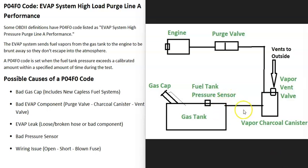The basics of how EVAP systems work: gas vapors leave the gas tank and go to what's called a charcoal canister, which is kind of like storage for the gas vapors. Located in or right next to the charcoal canister is a vent valve. The computer can close the vent valve to test the system and do different things.